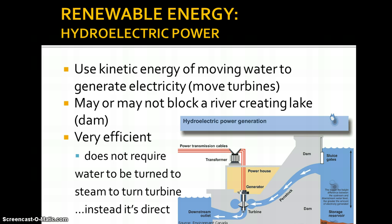Super efficient. Because it doesn't have so many different energy conversions like fossil fuels, biomass, and uranium do, it doesn't turn water to steam — that step is eliminated. It's just a direct process: moving water turns the turbine, which turns the generator, and then you've got electricity. There's no steam involved.